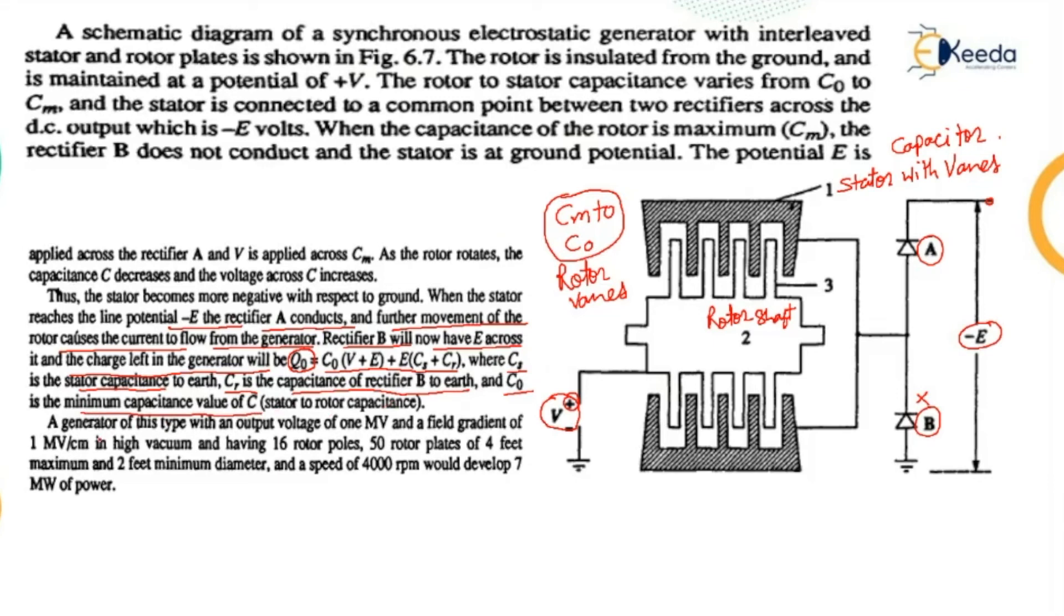A generator of this type with an output voltage of 1 MV and a field gradient of 1 MV per centimeter in high vacuum, having 16 rotor poles, 15 rotor plates of 4 feet maximum and 2 feet minimum diameter, and a speed of 4000 RPM would develop 7 MW of power.